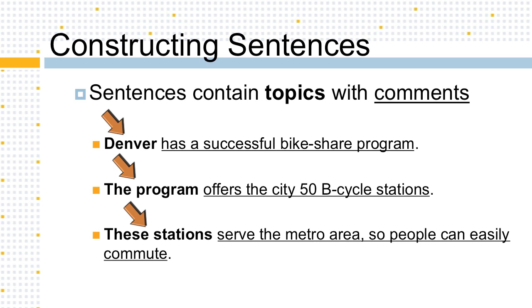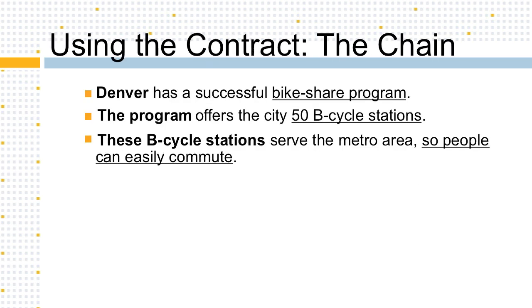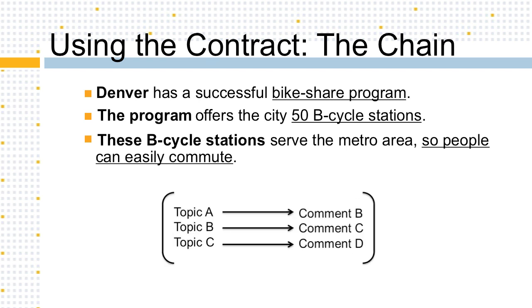If you look at these sentences in connection with one another, you'll see how the comment from one sentence becomes the topic of the next. This is one example of the Known New Contract. Each sentence builds off of the last by referring to the previous comment before offering any new information. We like to think of this type of idea progression as a chain. The end of a sentence directly links to the beginning of the next.